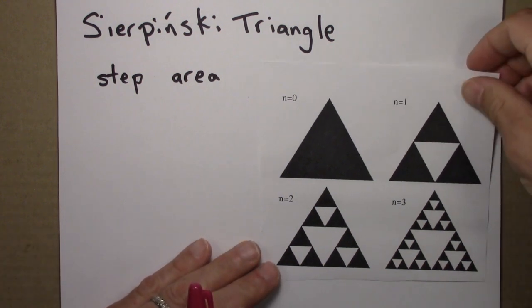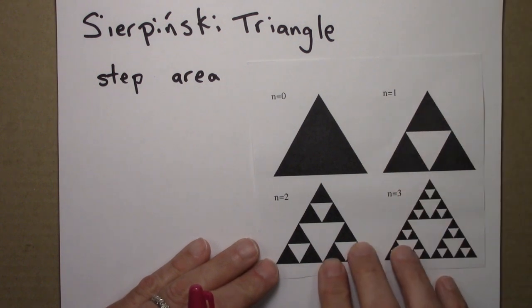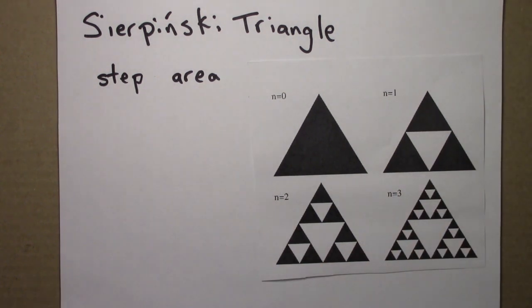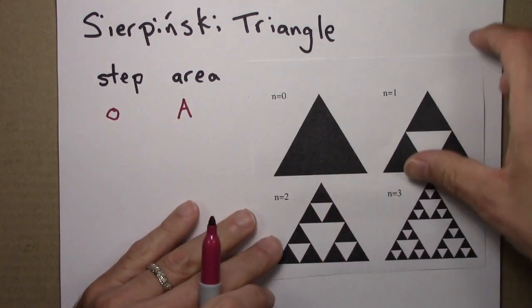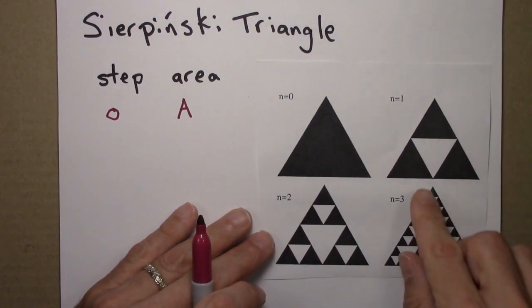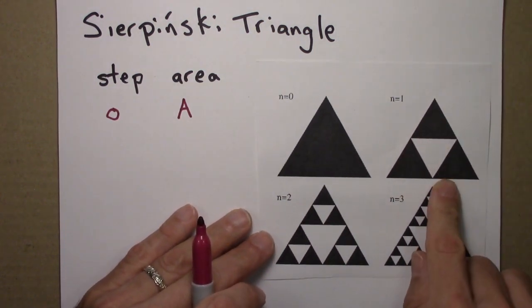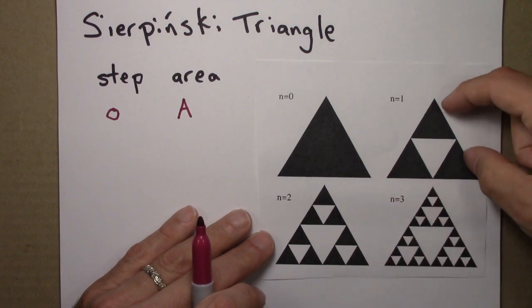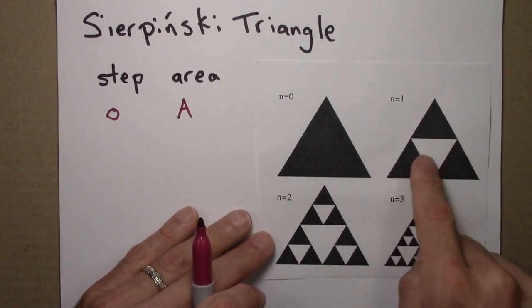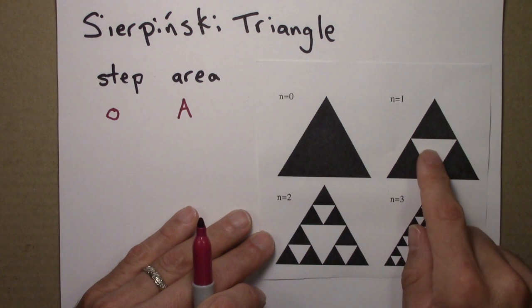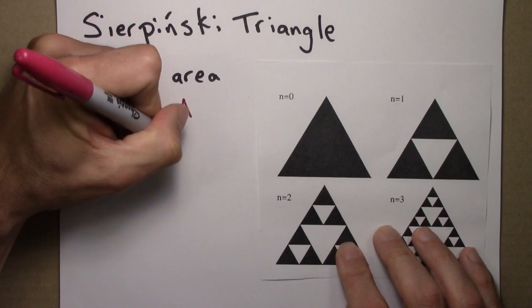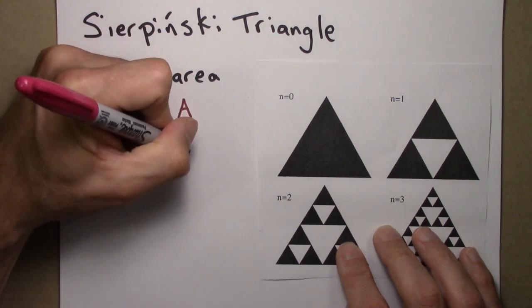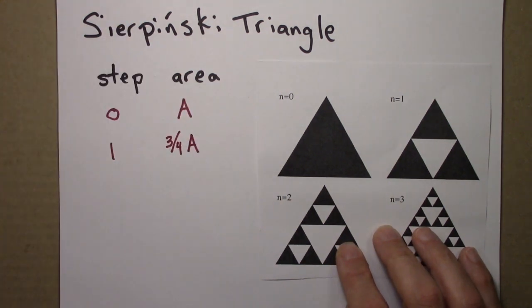Here are the steps in the construction of the Sierpinski Triangle. We decided that at step 0, initially, I'm just going to call this area A. So what is the area at step 1? Well, you can see that this triangle gets divided into 4 equal triangles, one of which is missing. So at step 1, the area is 3/4 of what we had originally.